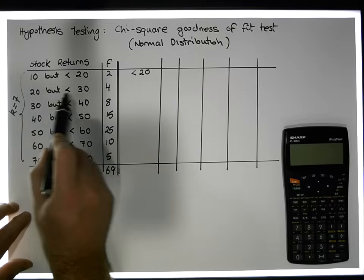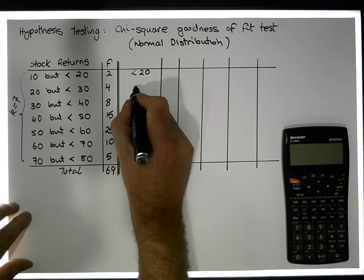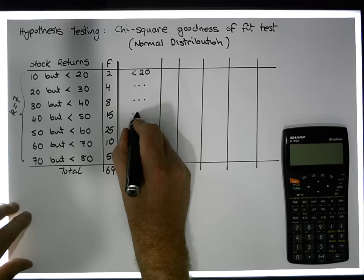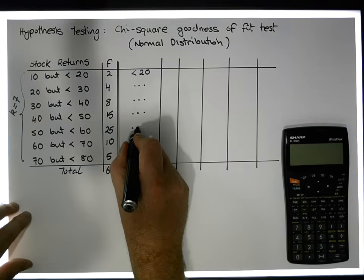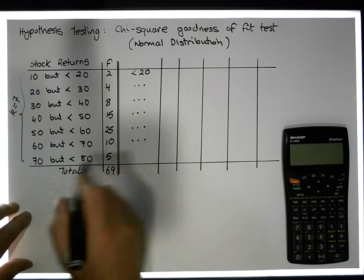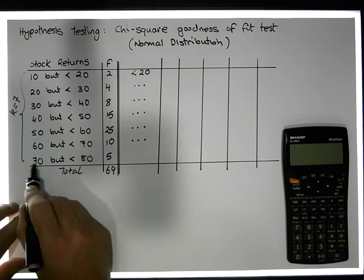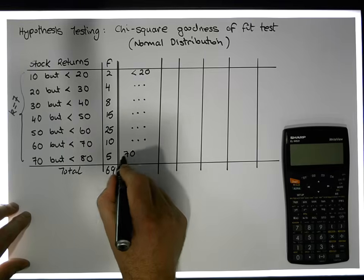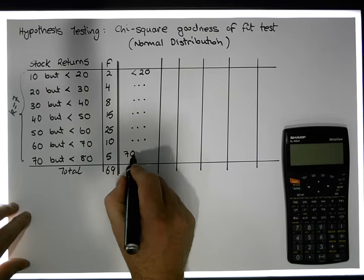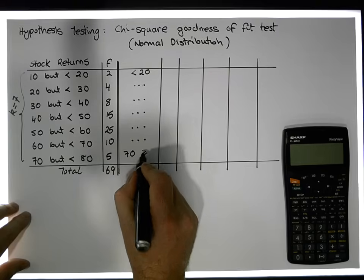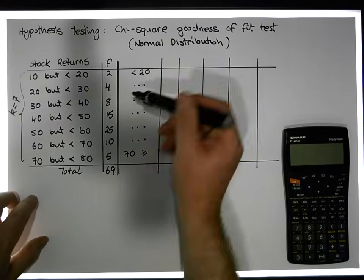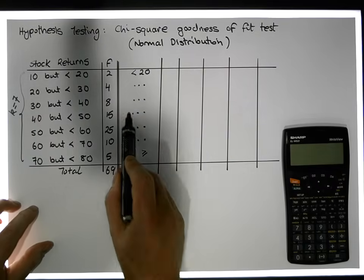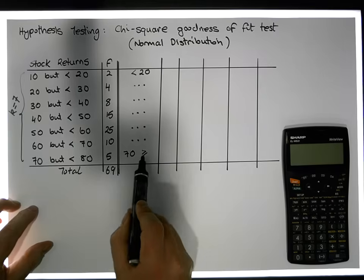The category between 20 and 30 remains the same, as do the categories 30 to 40, 40 to 50, 50 to 60, and 60 to 70. The final category will represent all observations greater than or equal to 70. So the intervals now form a continuous range from values less than 20 all the way through to values greater than or equal to 70.